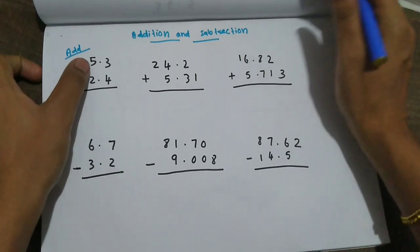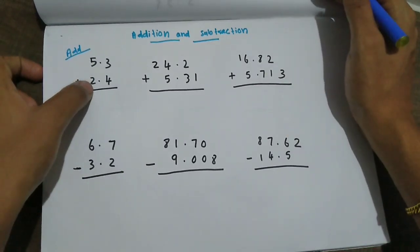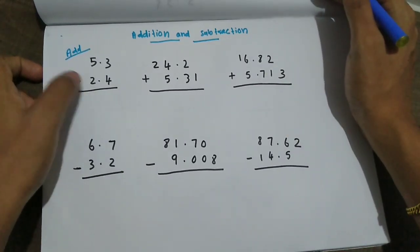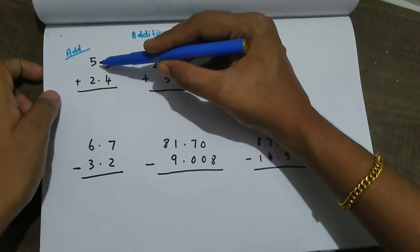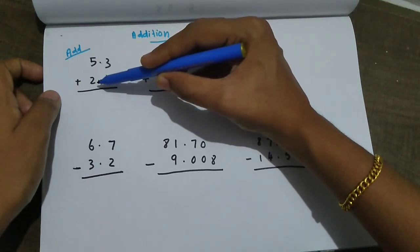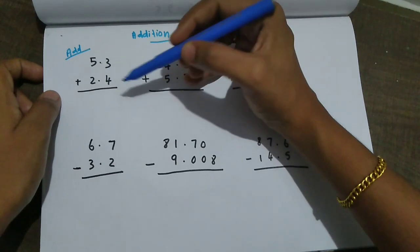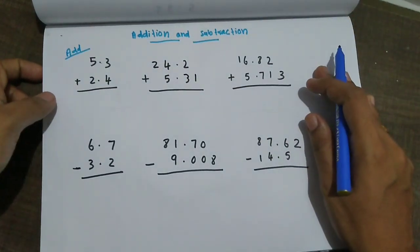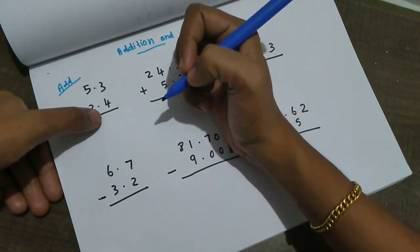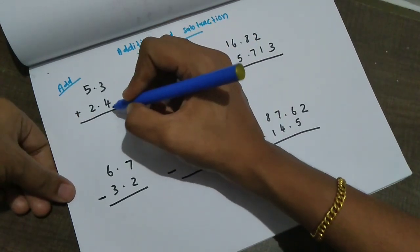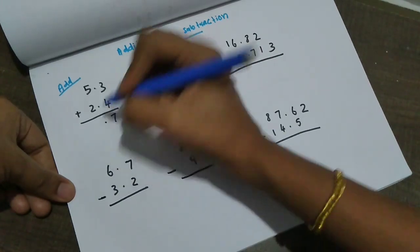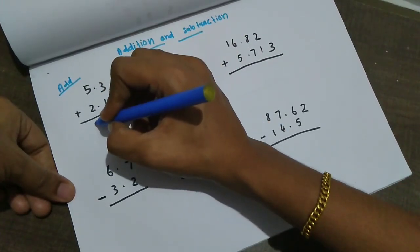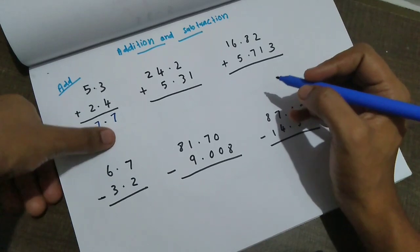Now we have decimal addition and subtraction. Here is one example: 5.3 plus 2.4 — we add these two numbers. 3 plus 4 is 7. 5 plus 2 is 7. The answer is 7.7.